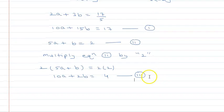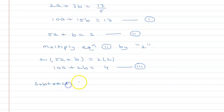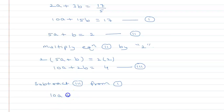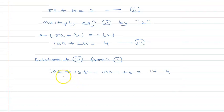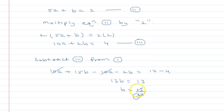Now if we subtract equation 3 from equation 1, we get 10a + 15b minus 10a minus 2b equal to 17 minus 4. The 10a terms cancel, leaving 13b equal to 13, so b equals 1.